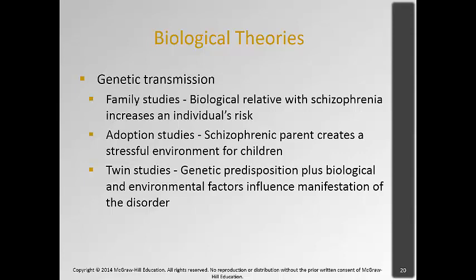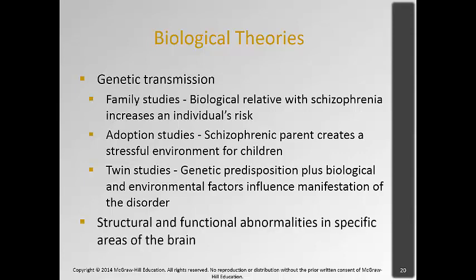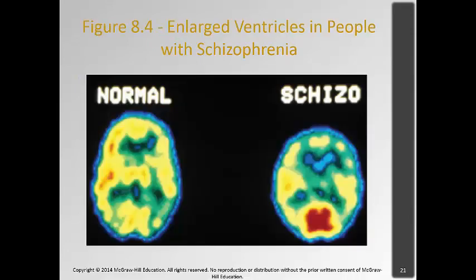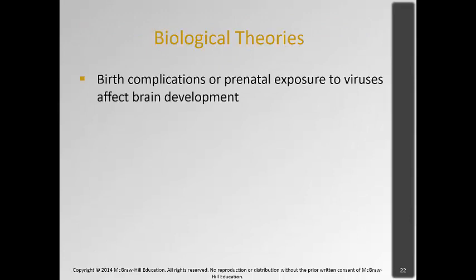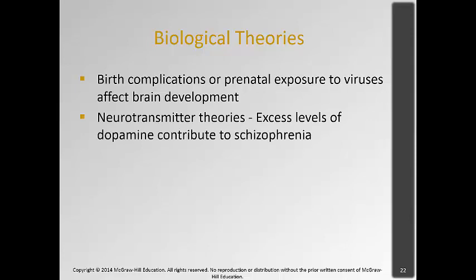Twin studies of twins reared together and apart found a significant likelihood of twins sharing the disorder. Researchers are also finding structural and functional abnormalities in specific areas of the brain — for example, enlarged ventricles in individuals with schizophrenia. There are also biological theories that birth complications or prenatal exposure to viruses affect brain development. People whose mothers had the flu or another illness during the first trimester were found more likely to develop schizophrenia.